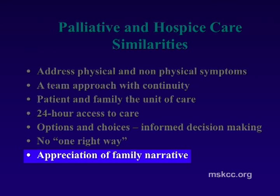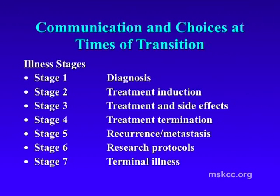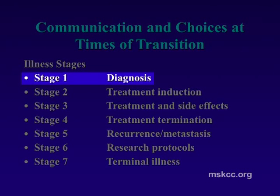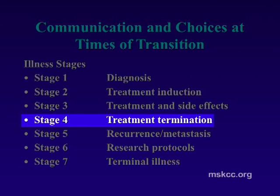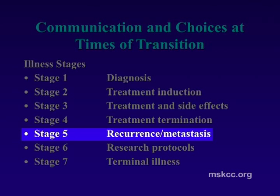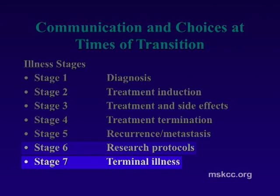We need to know who you are as a person — the family narrative — before we can help you sort out what you want and what's best for you. Times of transition can be very difficult: from diagnosis to treatment induction, treatment and side effects, stopping treatment, recurrent or metastatic disease, research protocols, and finally when these are no longer of benefit and terminal illness brings hospice in. These are all times when support can be very useful.